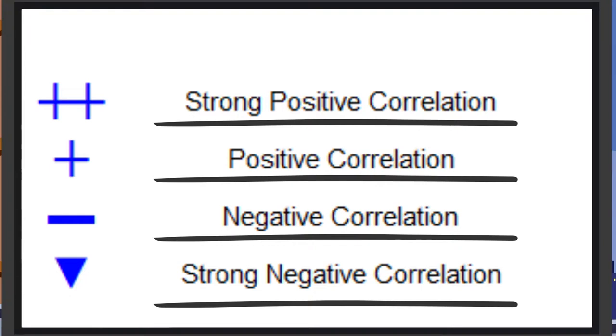For example, one plus is a positive correlation. Two plus is a strong positive correlation. The symbol minus is a negative correlation.